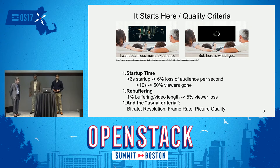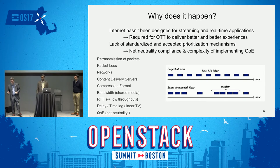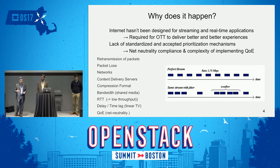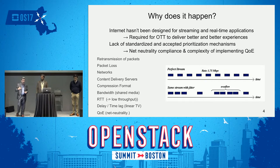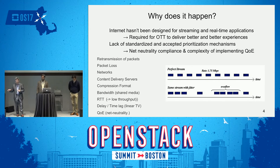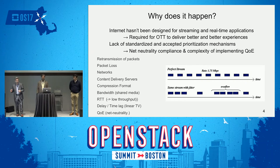So why does this actually happen? The dedicated networks built for our homes were designed reasonably well, but the internet wasn't really designed to handle real-time streaming. For over-the-top video — Hulu, Sky, Netflix — standardized and accepted prioritization mechanisms simply don't exist. If everything runs at a consistent rate it's fine, but when the delay isn't consistent we get jitter, and things arrive at different times causing video drops.